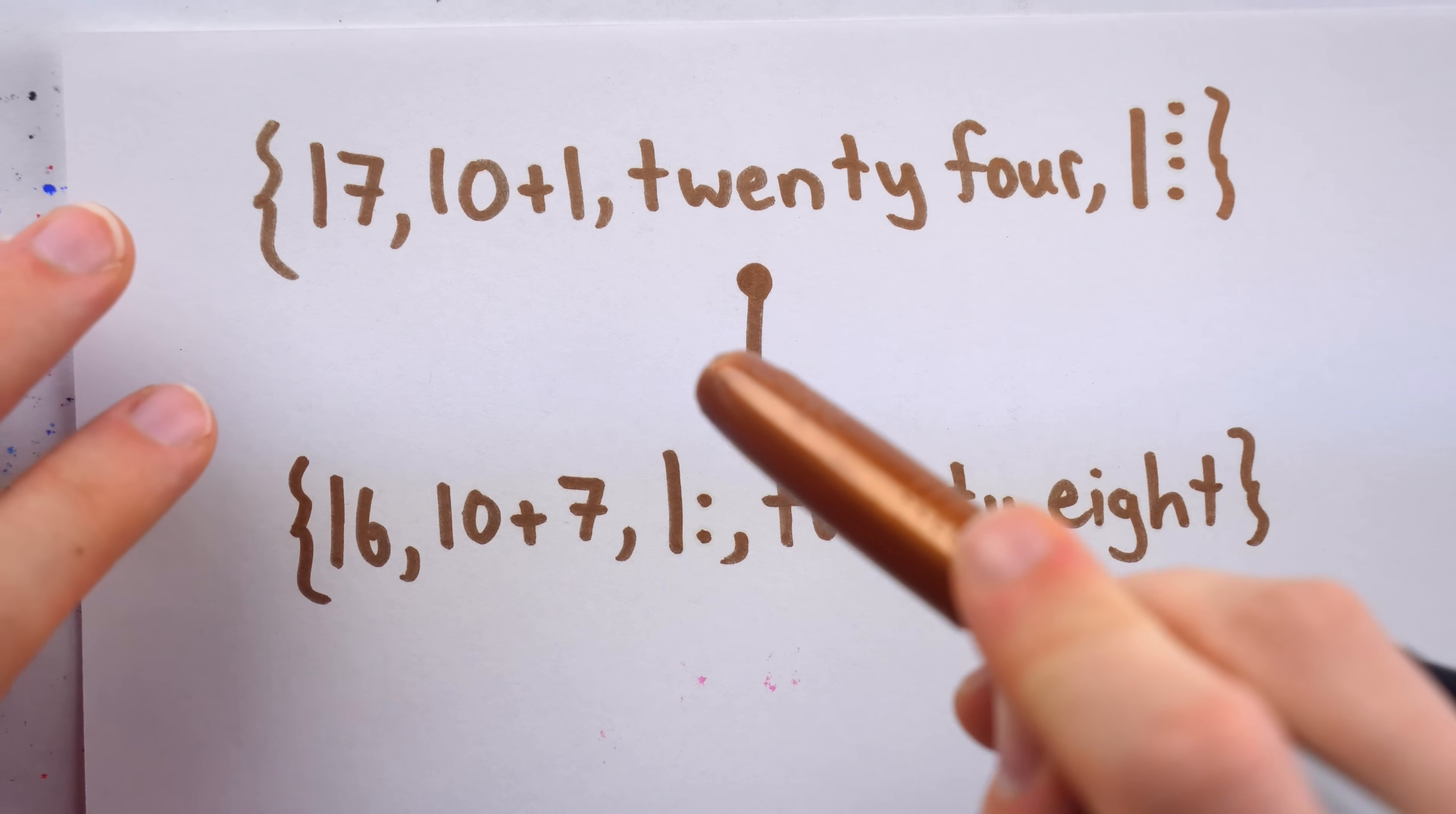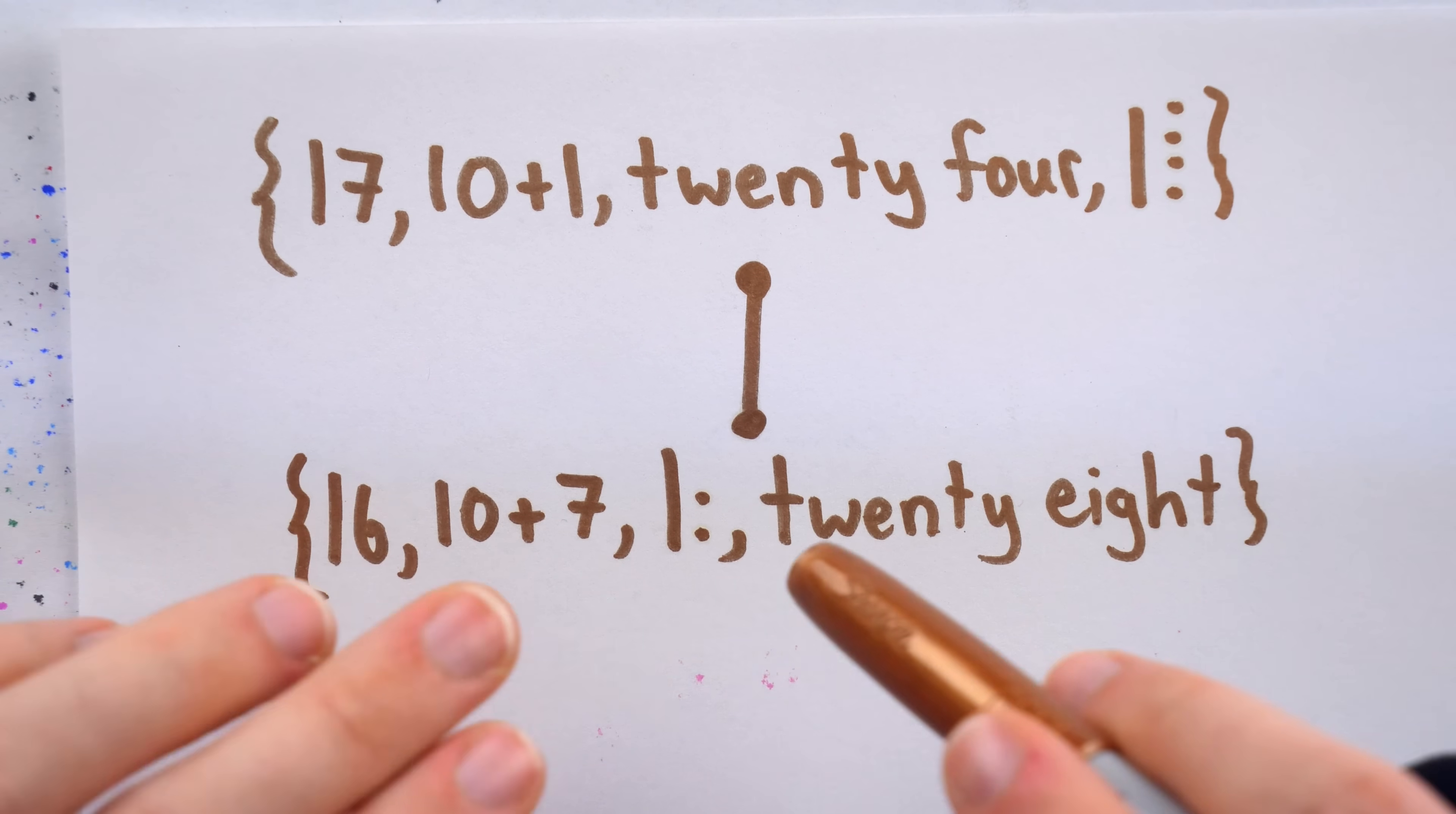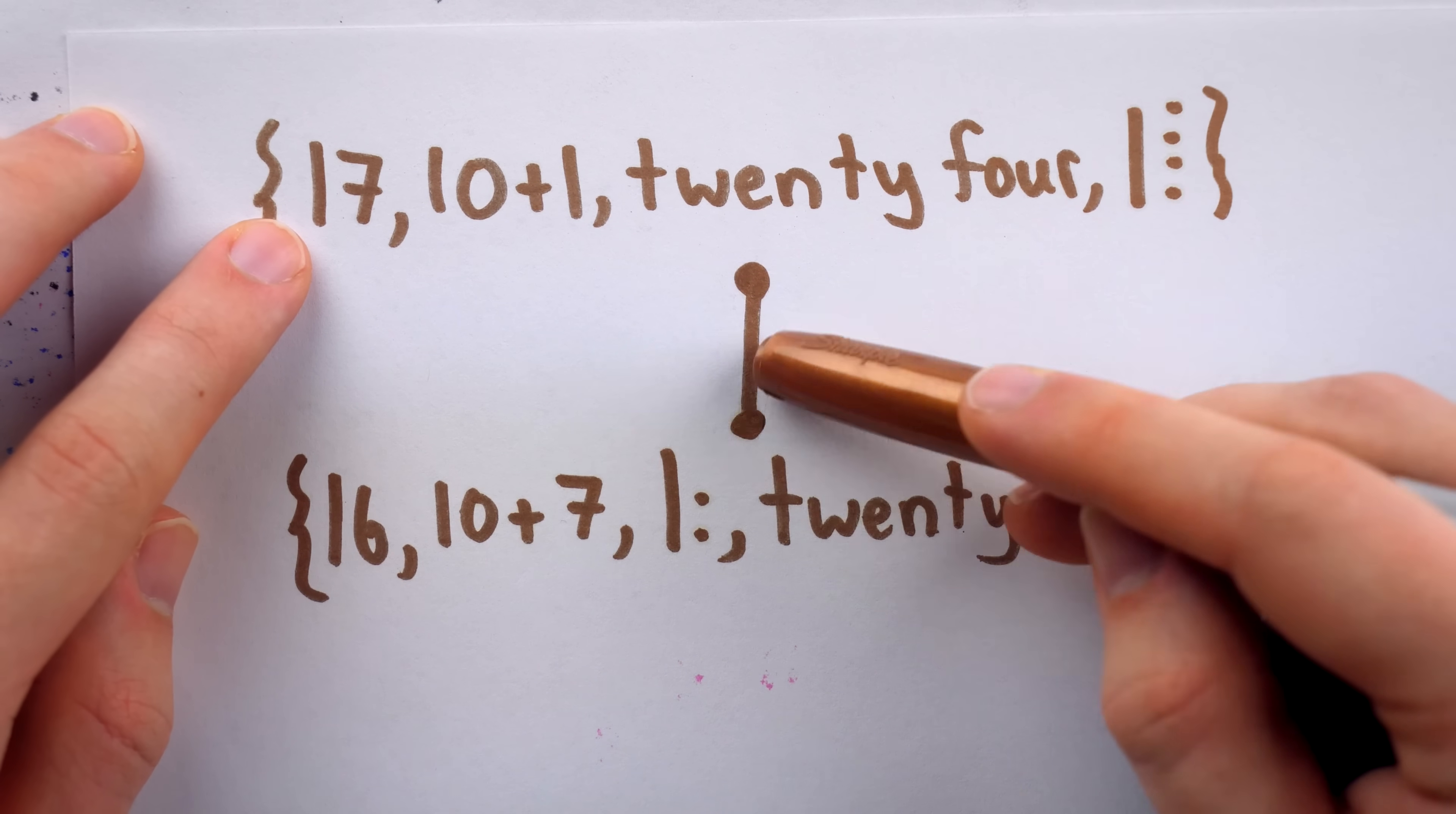More generally, we could say that they are joined by an edge because their intersection, the intersection of these two sets, is non-empty. That means if we look at only the elements they have in common, well, there is some stuff there. In this case, there's exactly one thing, which is the number 17, but the point is it's not empty. Their intersection isn't empty, so they are joined by an edge.